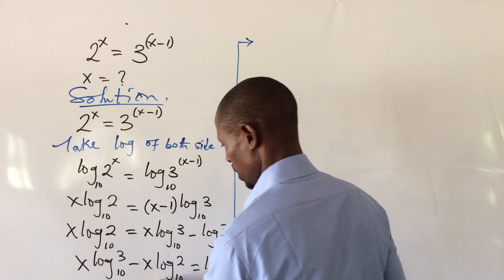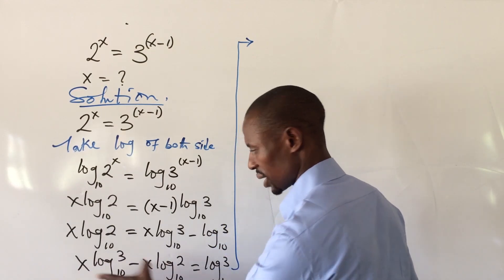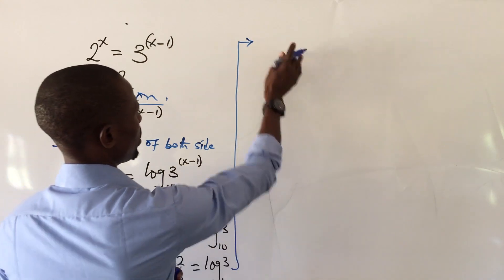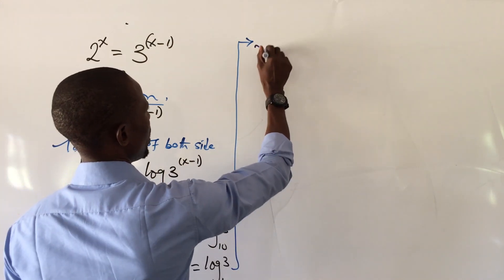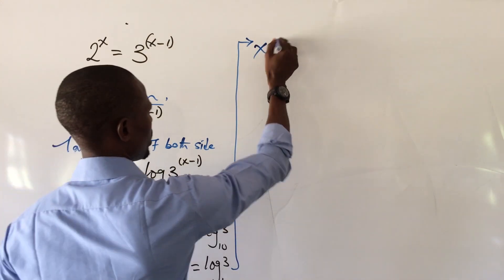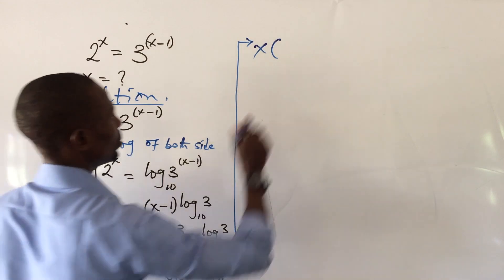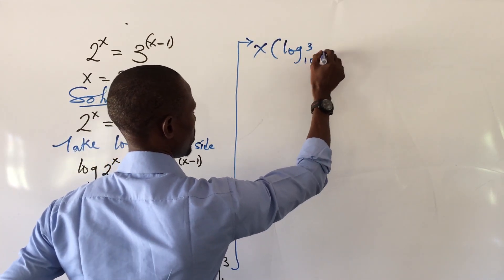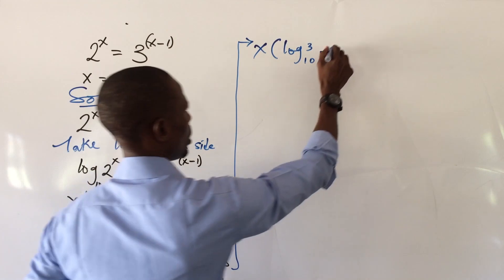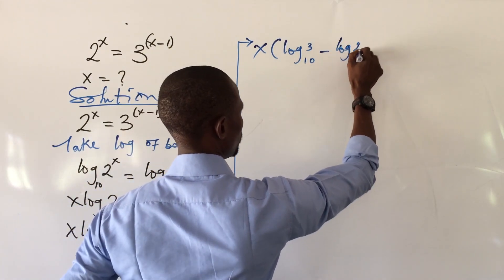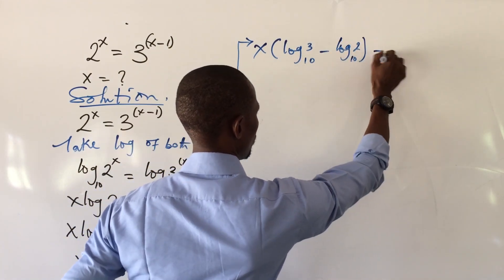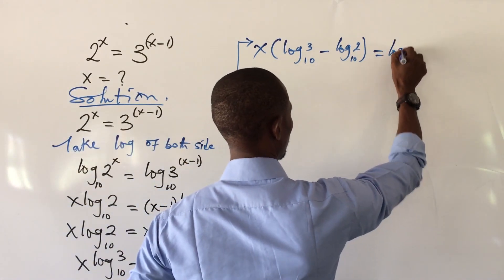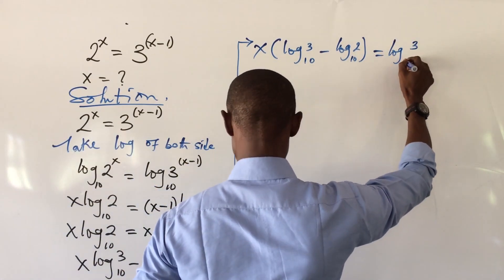We have x in both terms on the left, so I can factor x out. Factoring x out gives us: x times (log 3 base 10 minus log 2 base 10) equals log 3 (base 10).